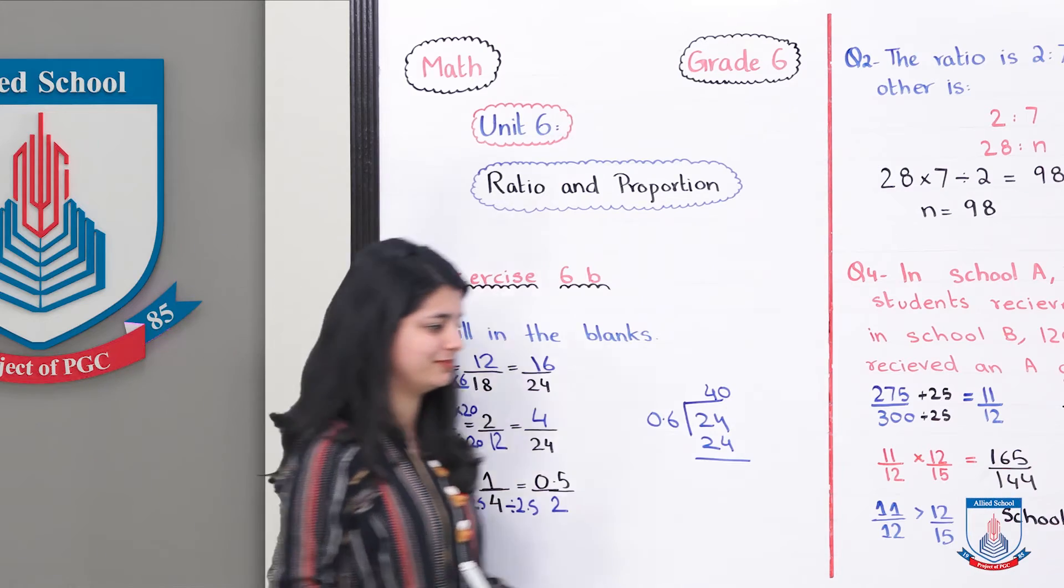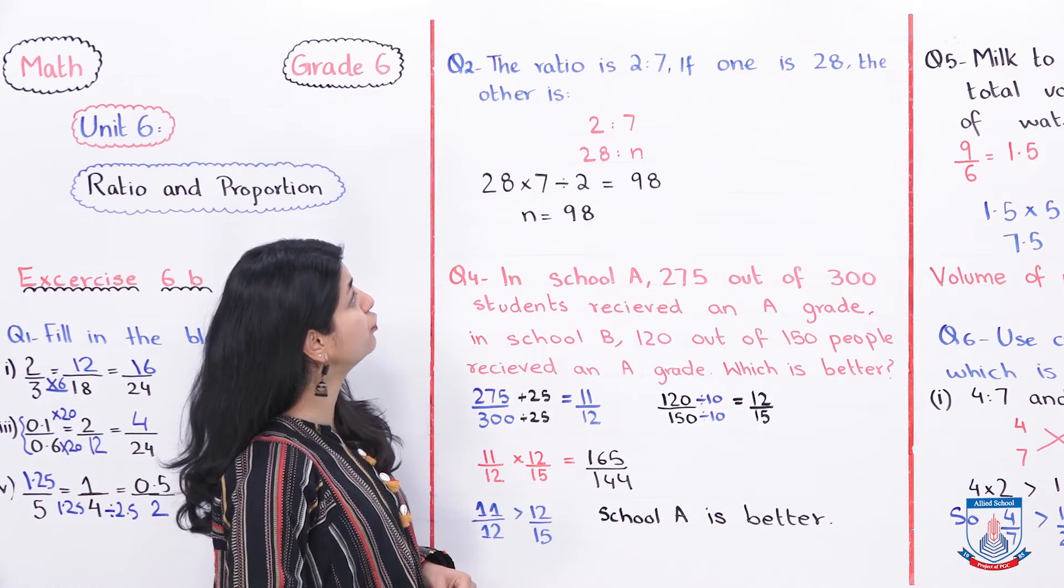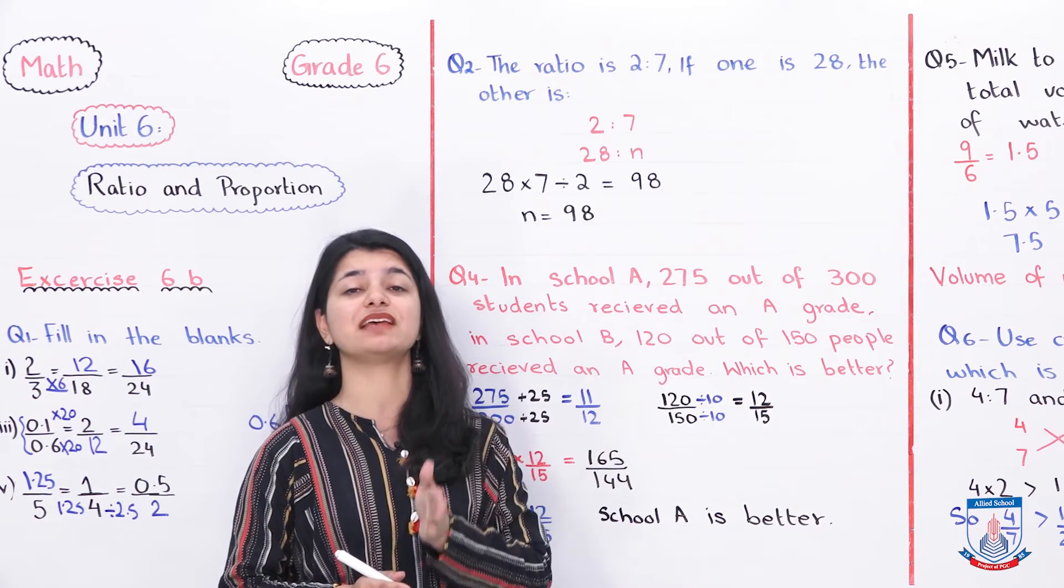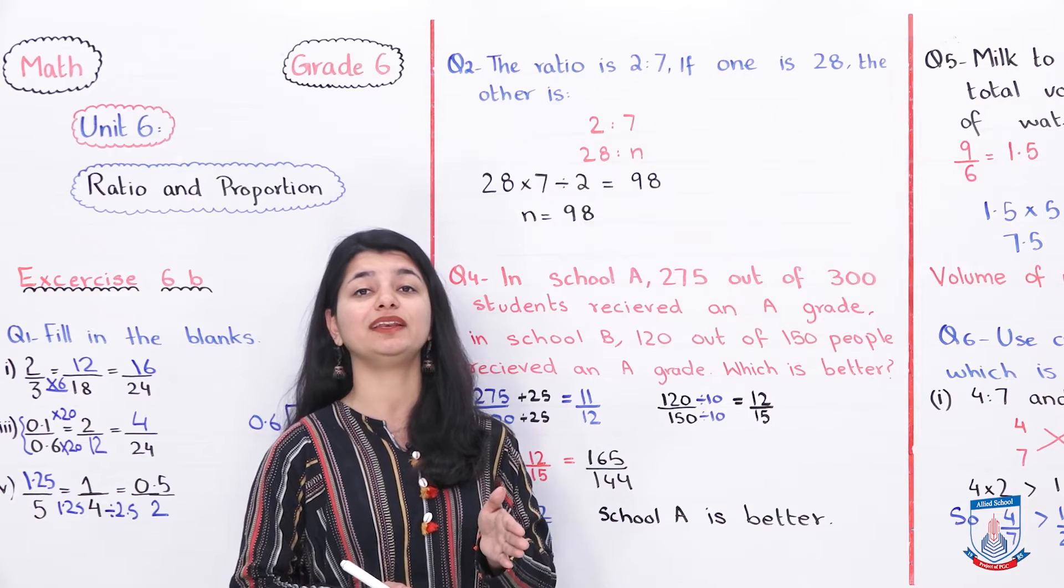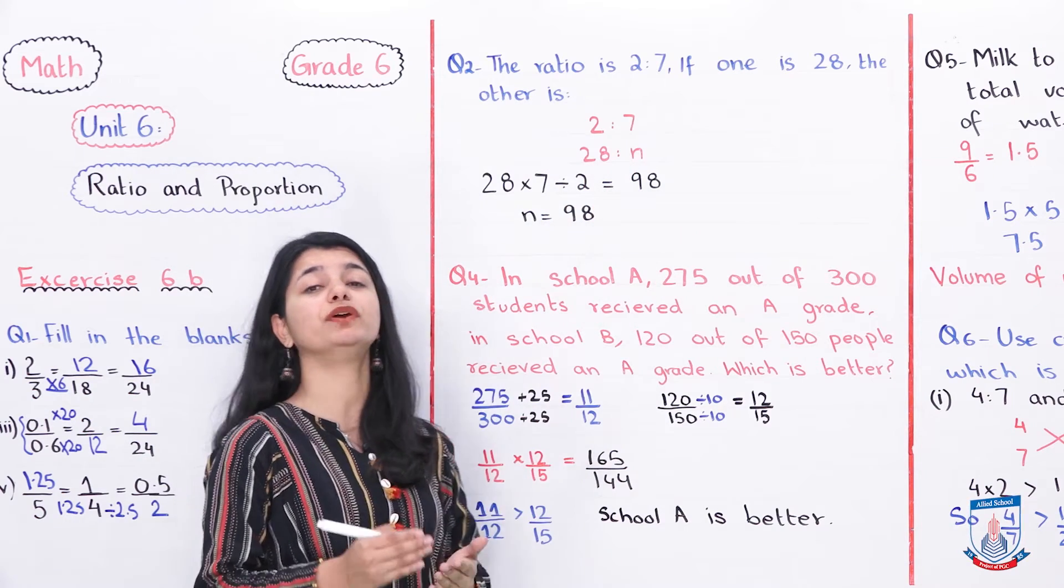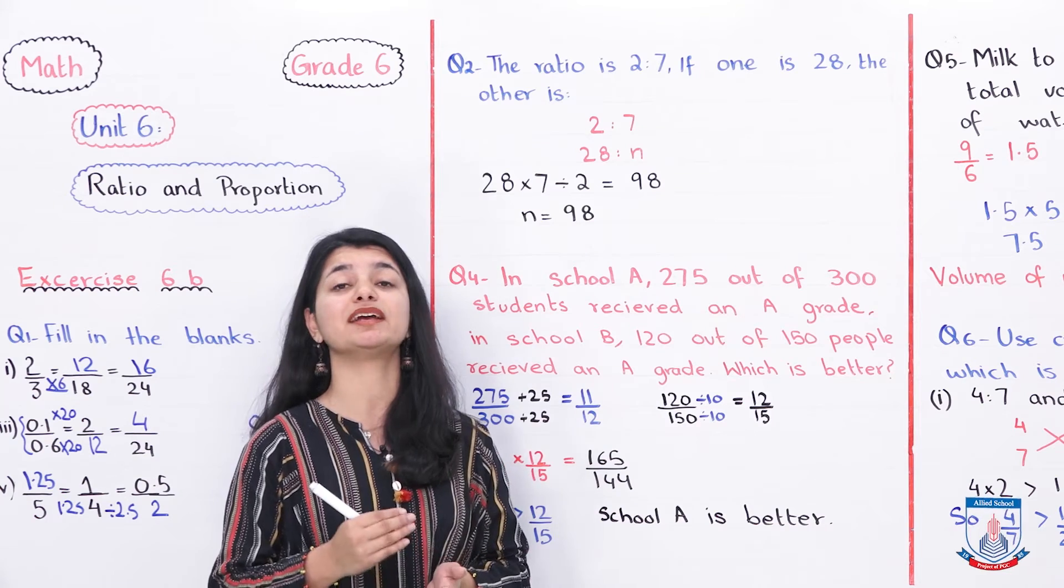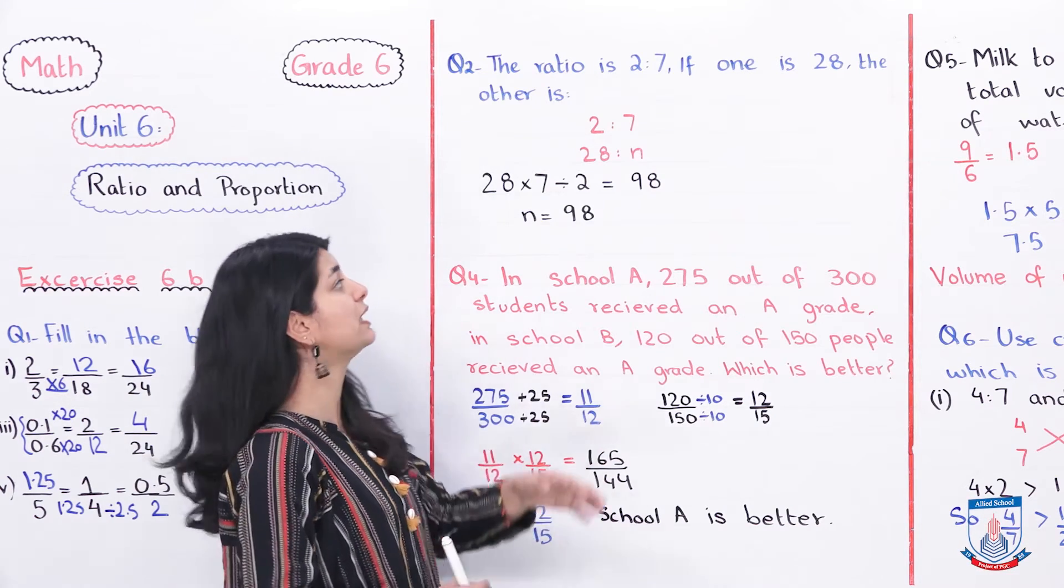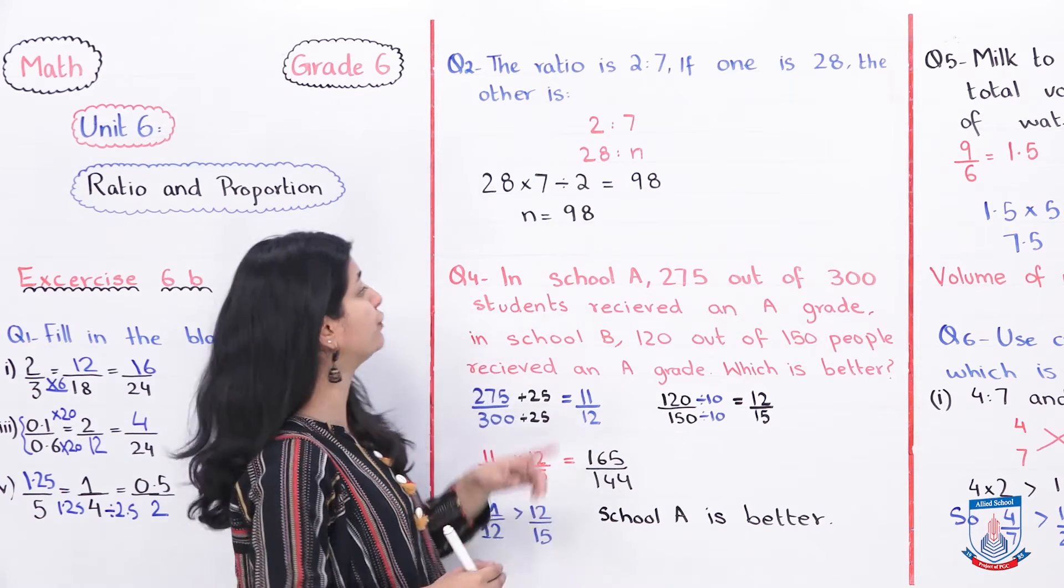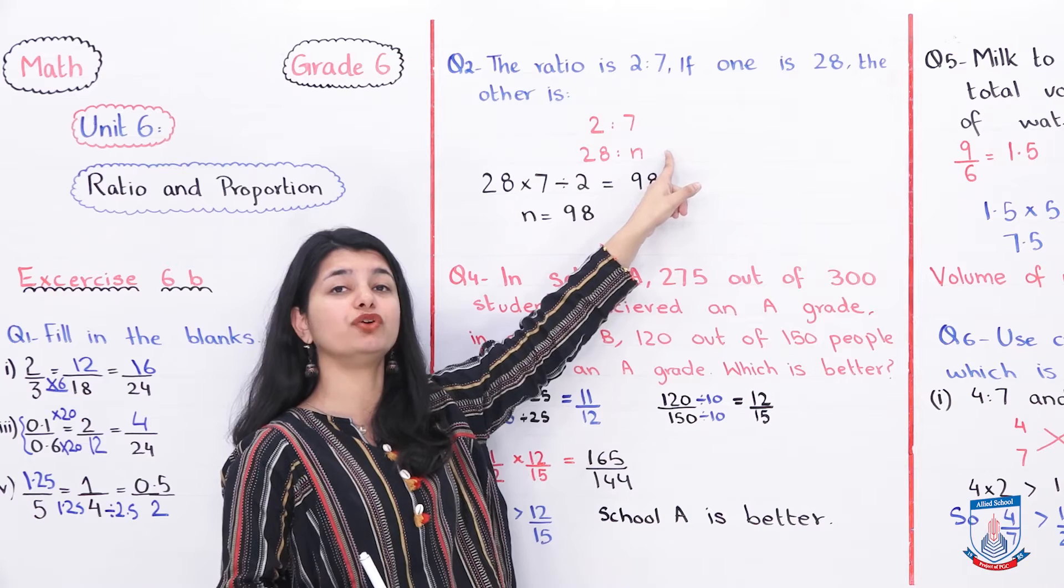Let's look at question number 2. Question number 2 is a word problem in which they say, the ratio of 2 quantities is 2 by 7. If 1 is 28, find the other. You know the ratio given is 2 and 7. They've told you that the first value is 28. So if you look at it, 2 ratio 7, 28 ratio something you have to find out. We put an N over there because we don't know what value is there. In this situation, in the examples we did, we determined that basically you multiply these two and then you put these two on the other side and solve them in the form of an equation.